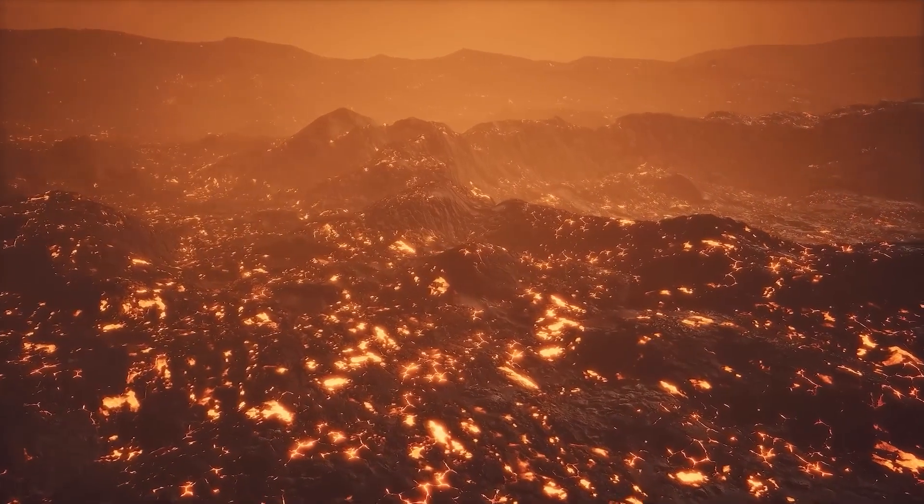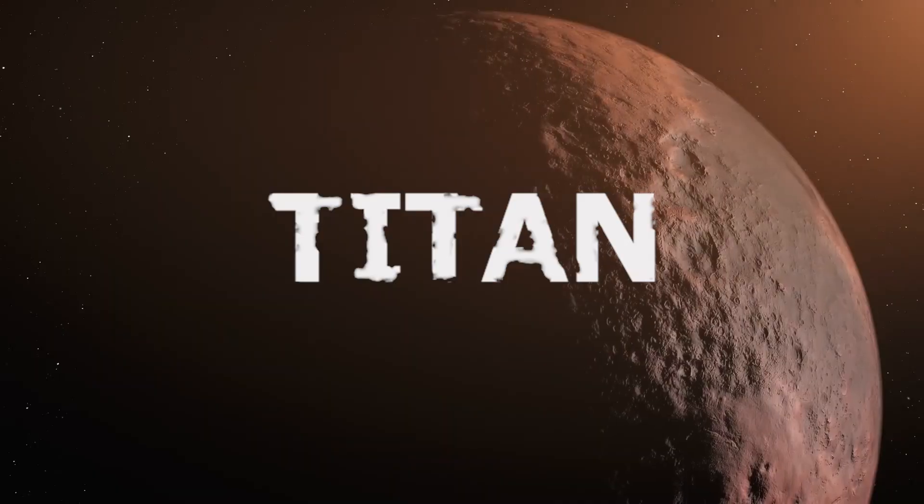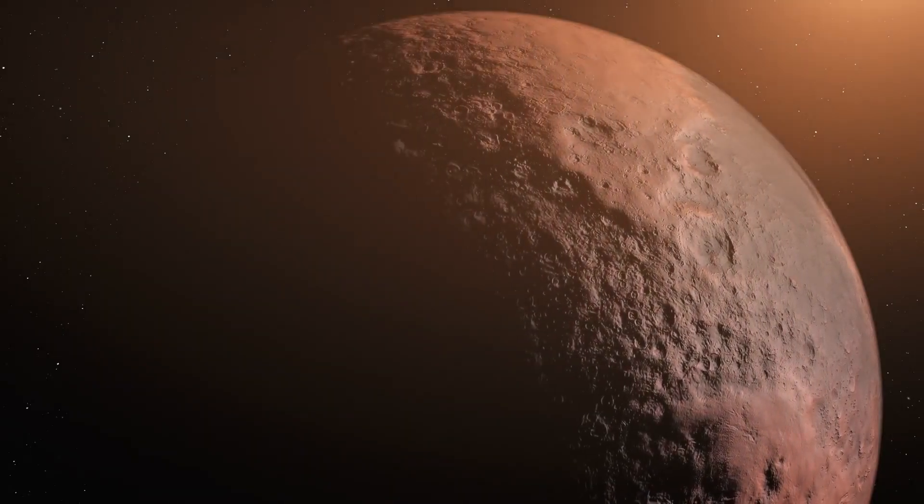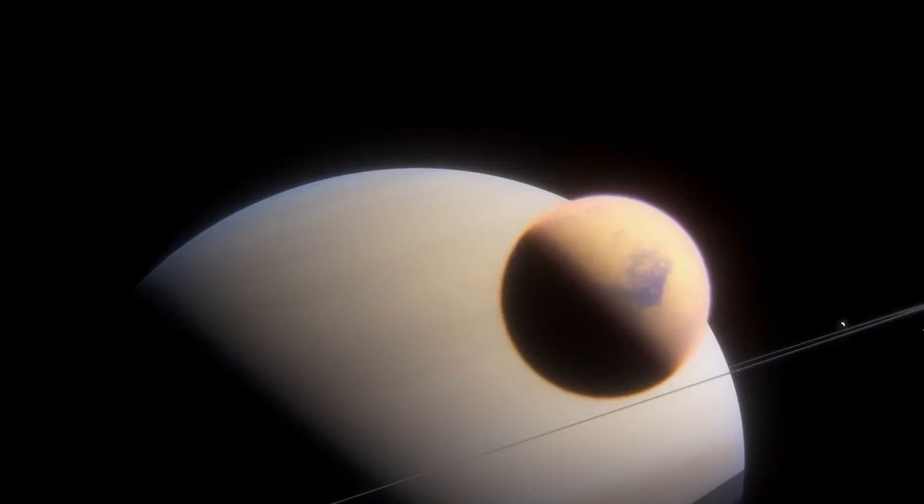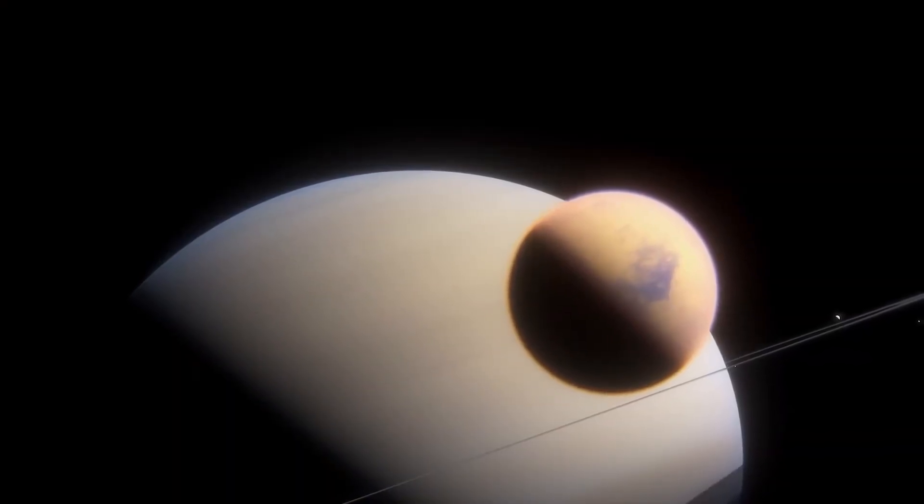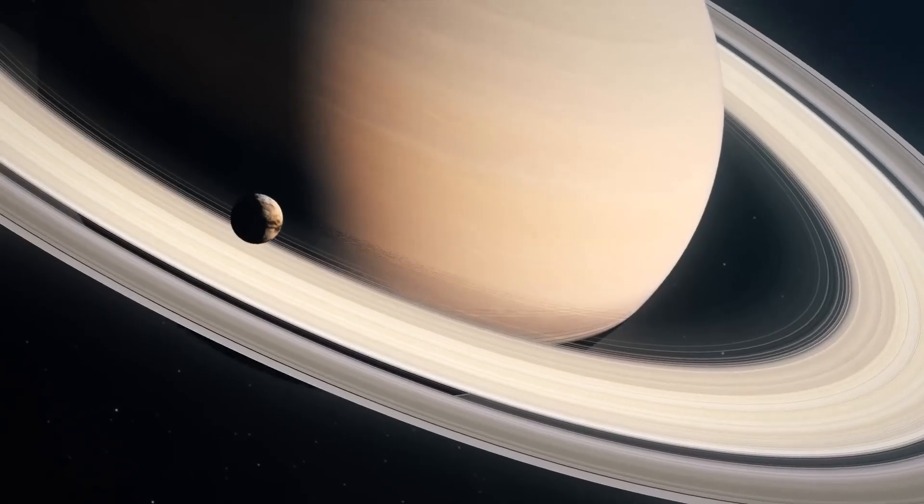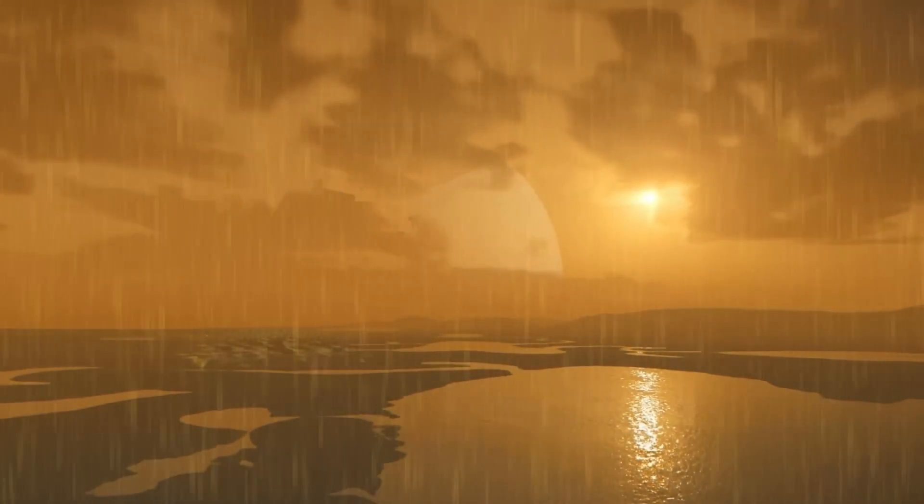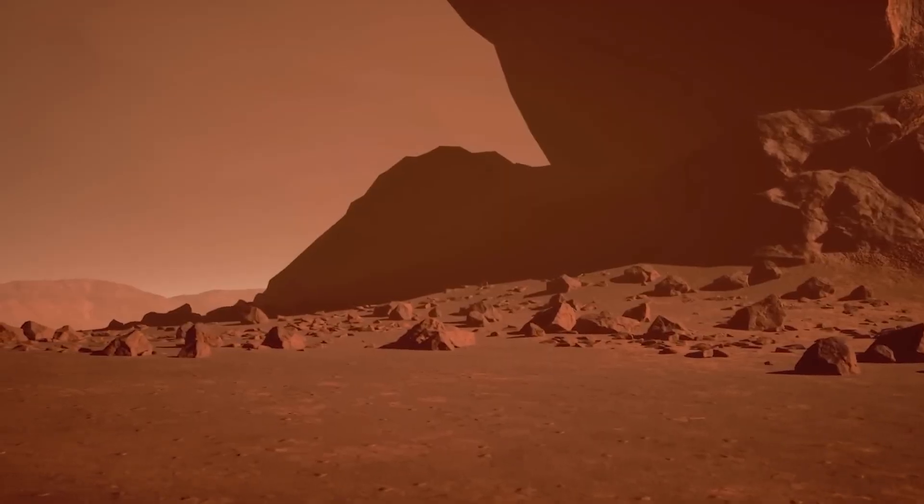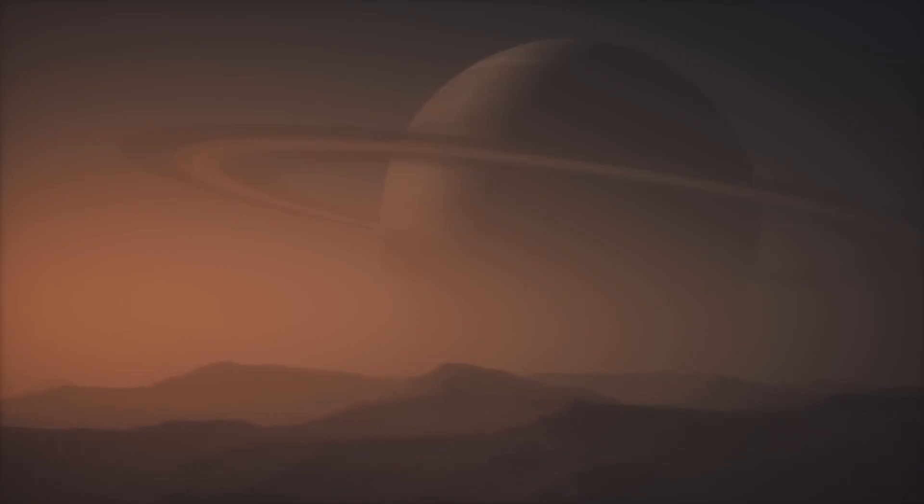But the Kuiper Belt isn't the only place Webb has turned up surprises. It also peered into the thick golden haze of Titan, Saturn's largest moon. Titan has long fascinated scientists, after all, it's the only other world in the solar system with stable liquids on its surface. Not water, but lakes and rivers of liquid methane and ethane, shimmering under a sky shrouded in orange clouds.